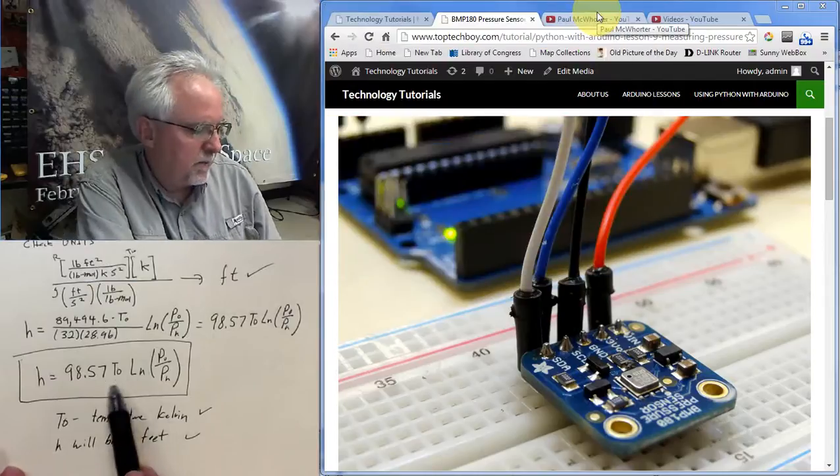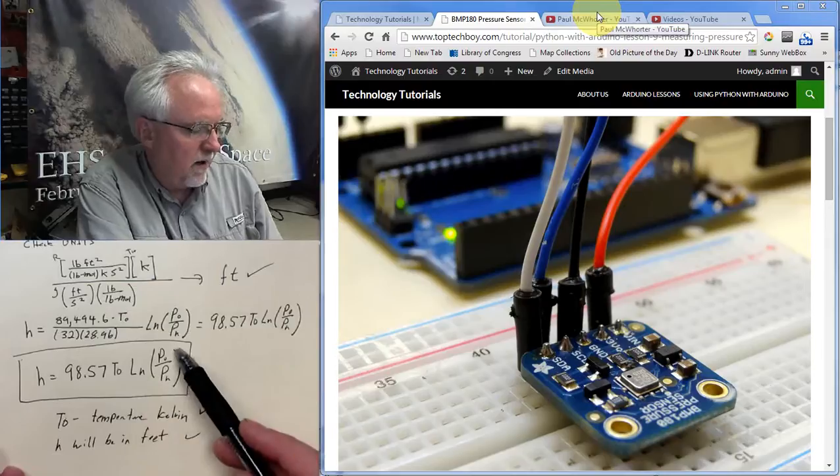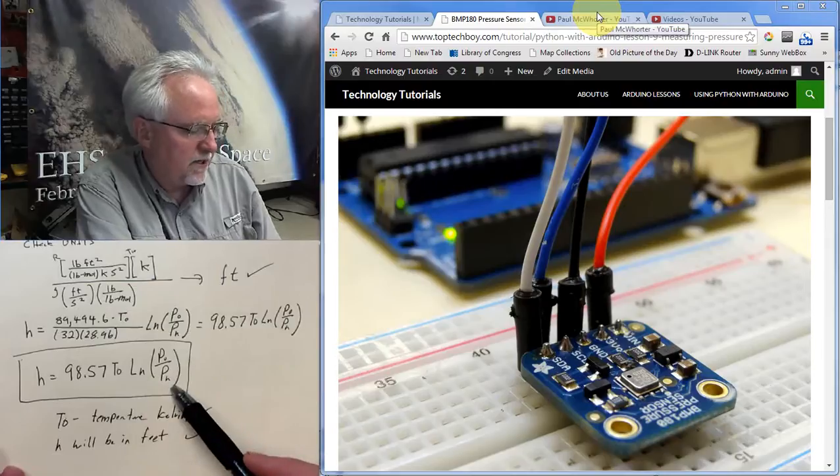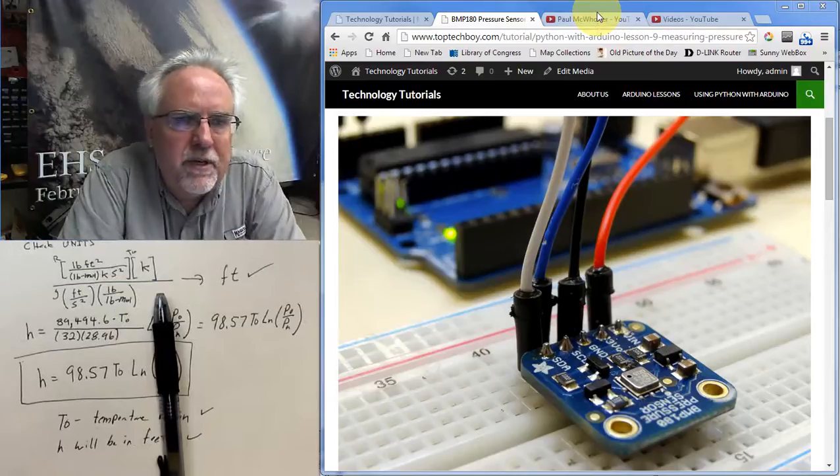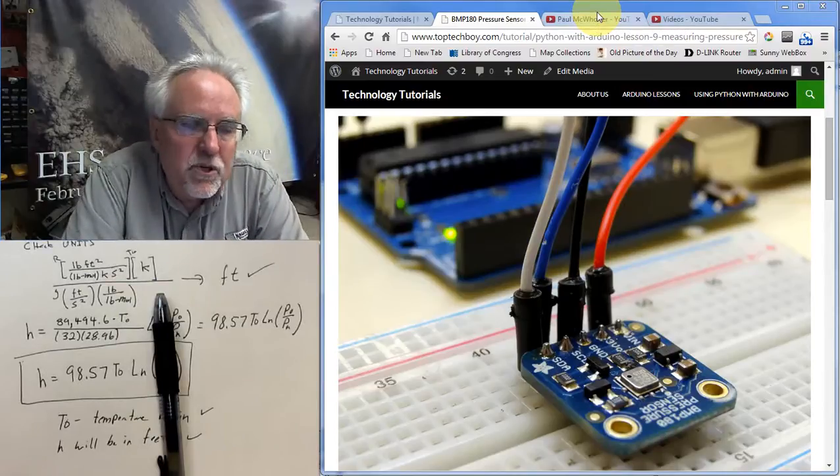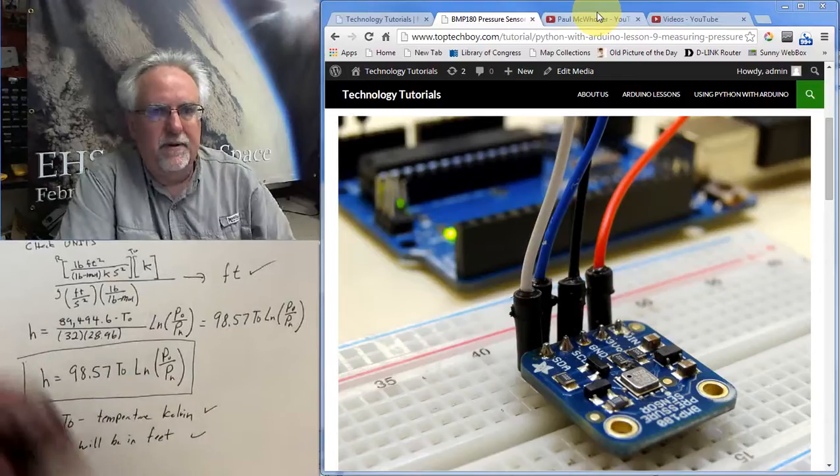And so temperature in Kelvin times the natural log of the pressure on the ground, divided by the pressure at the height, times 98.57. And that should give me, that should give me the height.